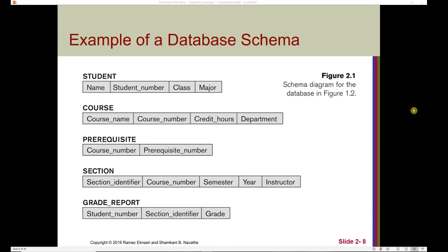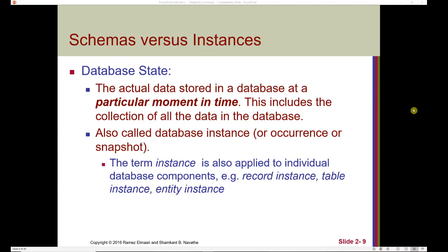For a student, we can see that the student has a name, a student number, a class, and a major. For a course, we're keeping track of course name, course number, credit hours, and department. The difference between a schema and an instance lies in that the instance provides actual data for the schema representation. This can be captured in what's referred to as a database state — the actual data stored in a database at a particular moment in time. If we were to go to a store and take a snapshot of the inventory system, we would see that current database state.